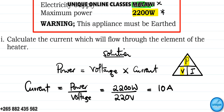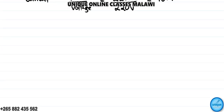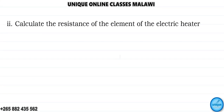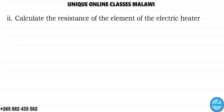The fuse rating should be 13 amps. Now for question number two, we need to calculate the resistance of the element of the electric heater. Let's first list our formulas.